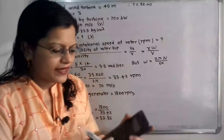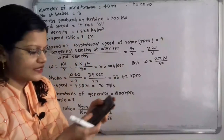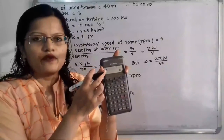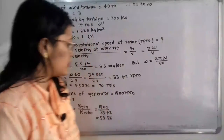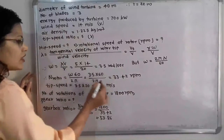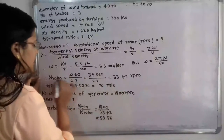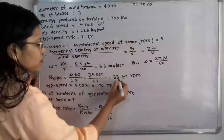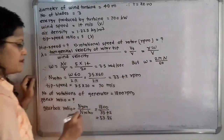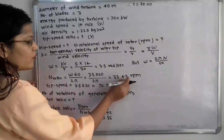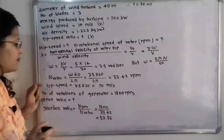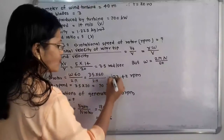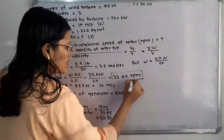In the calculator, pi is directly available using the shift button. When we put all the values in, we get N_rotor — the rotational speed of the rotor — as 33.42 rpm, that is 33.42 revolution per minute. This is the answer for the rotational speed of the rotor.